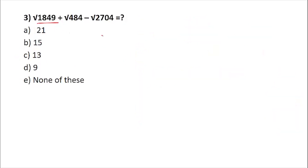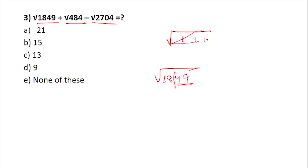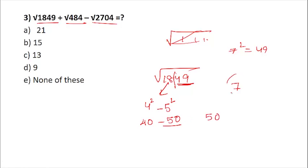Next, we have to find square roots. I have shown in previous videos how to find the square root of a number. Take 1849: separate the last two digits. Which number squared gives 49? That is 7, so keep 7. Then 18 lies between 4² = 16 and 5² = 25, so the base is 50. Subtracting the extra gives 43. So the square root of 1849 is 43. For 484, from the memorized table, 484 is the square of 22 — no calculation needed.